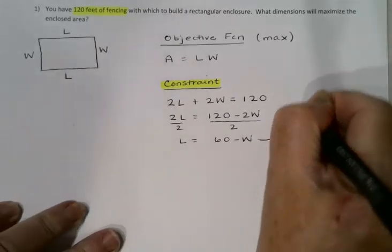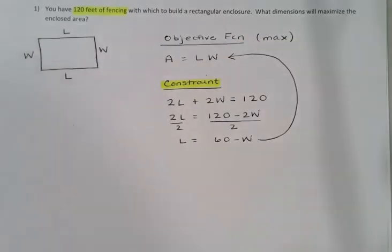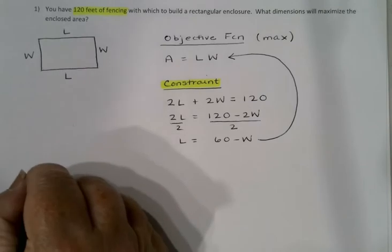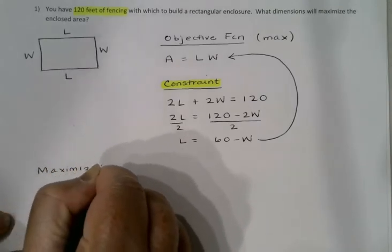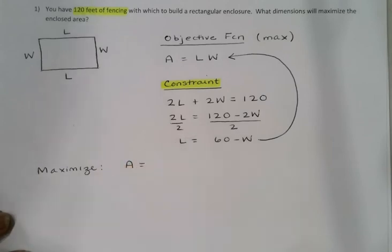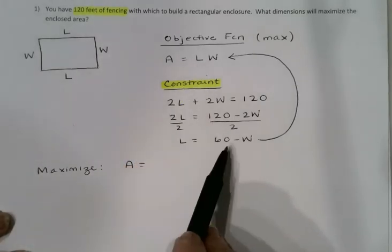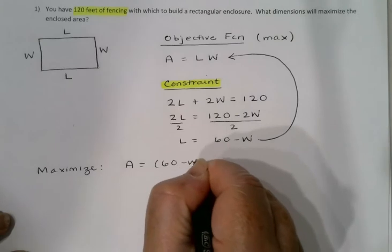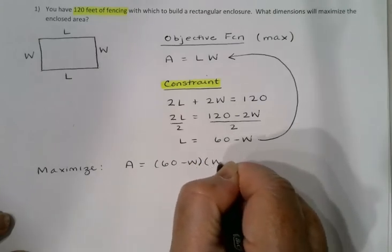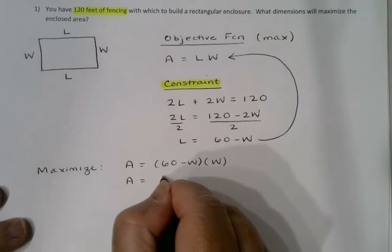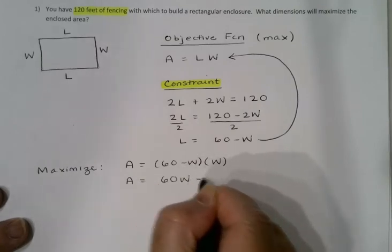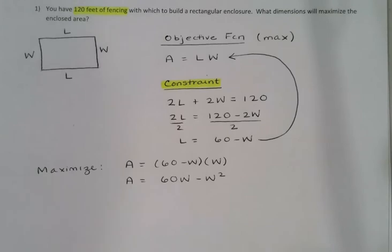Then we're going to plug that back into the objective function to get rid of the L. So my goal now is to maximize the area function, which I'll write as (60 - W) times W, or 60W - W².